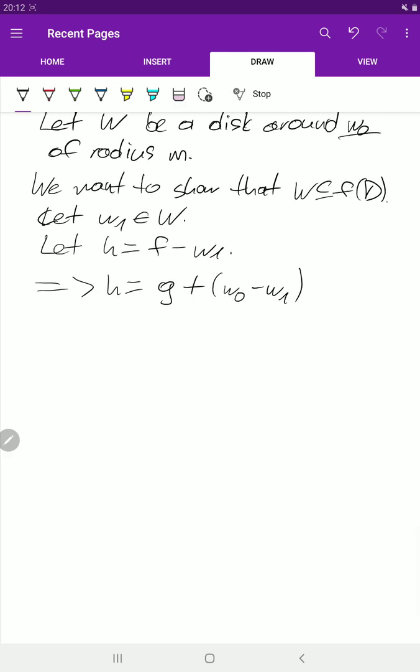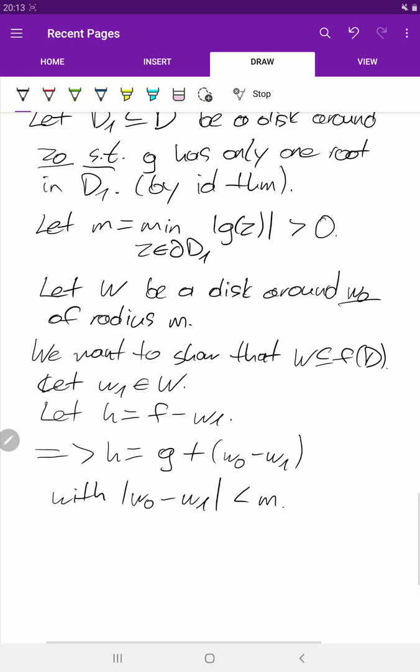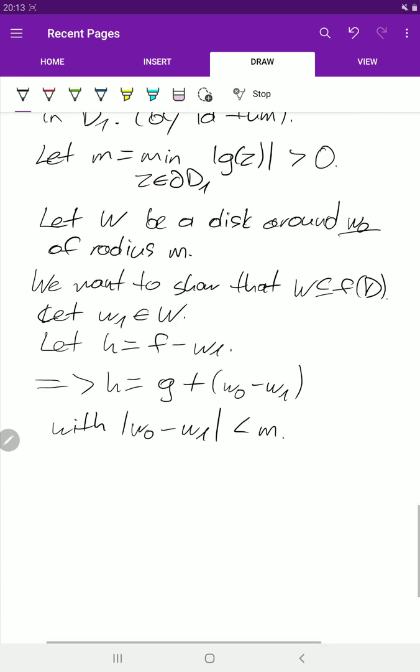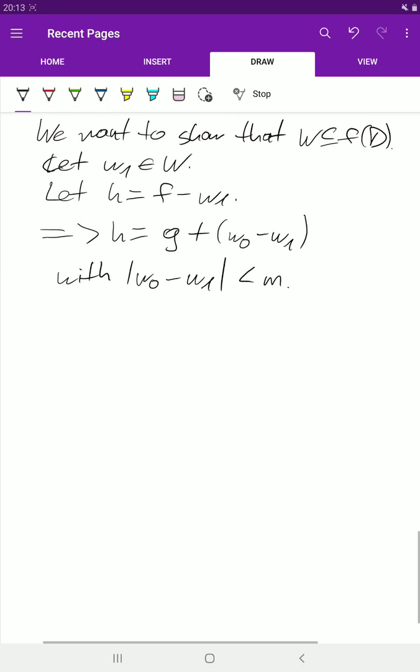And we also see that the modulus of w0 minus w1 is less than M. Why is that? Well, the disk W has radius M and it's around w0, so this is just by definition.